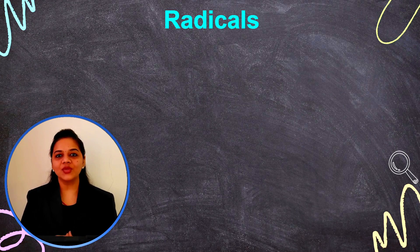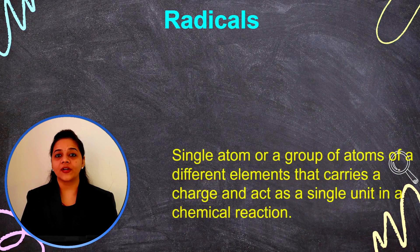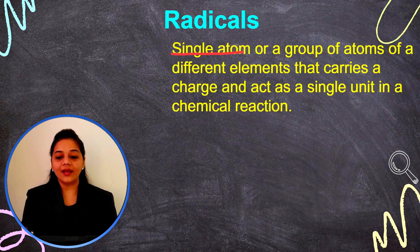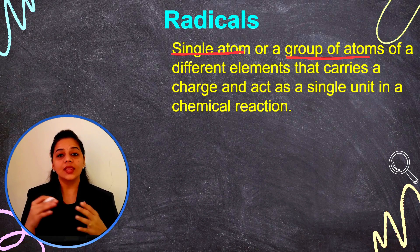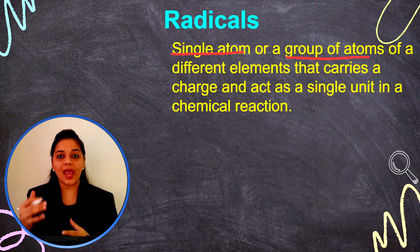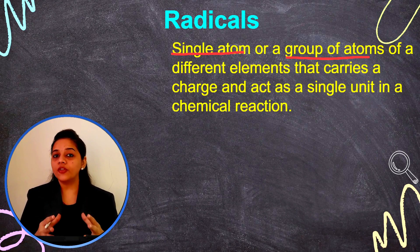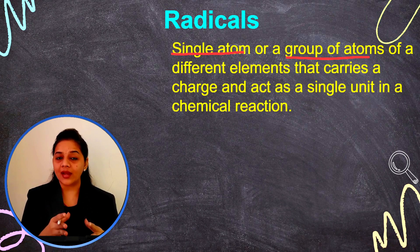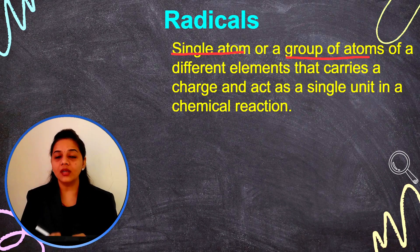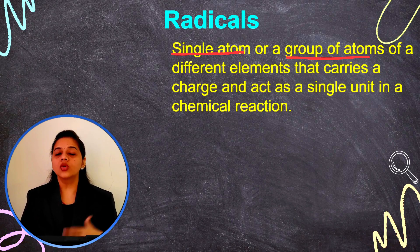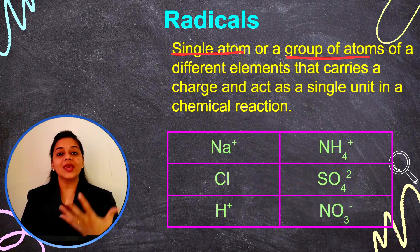Hello children, welcome to Curious Minds with Hemangini. Our today's topic is radicals. What is radicals? A radical is a single atom or a group of atoms of different elements that carries a charge and acts as a single unit in any chemical reaction. If you want to learn about chemical formula, chemical reaction, and how to balance chemical reactions, you must understand radicals first. So let's understand radicals with examples.